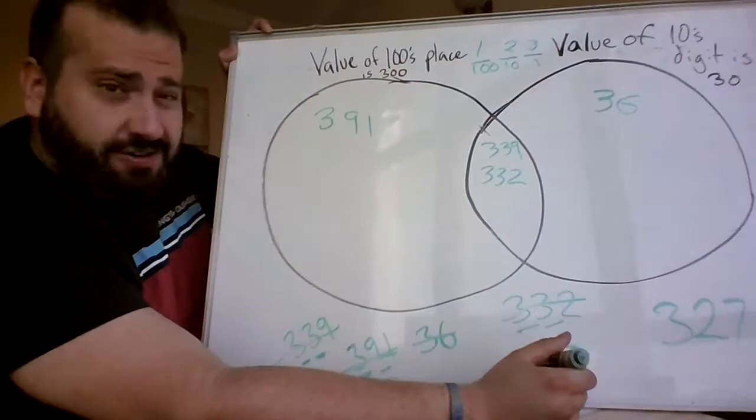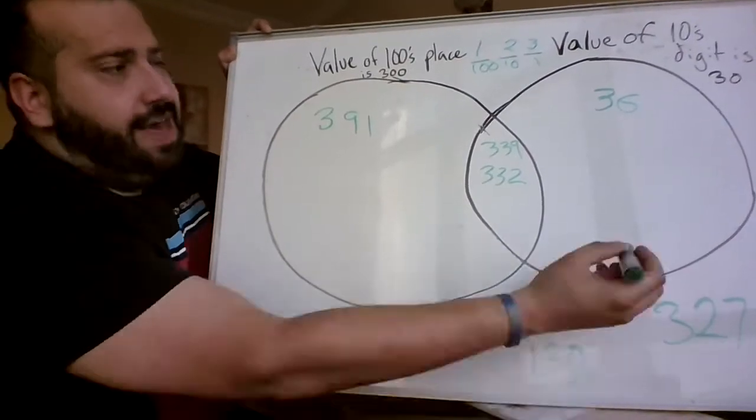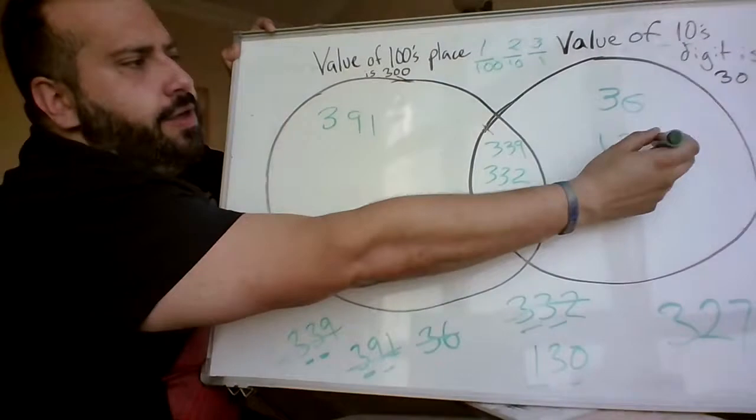130. Is there a 3 in the 100s place? Nope. But we got one in the 10s? 130.